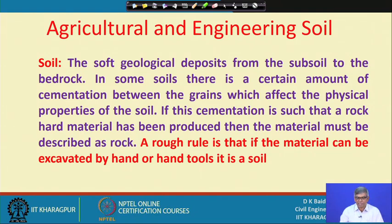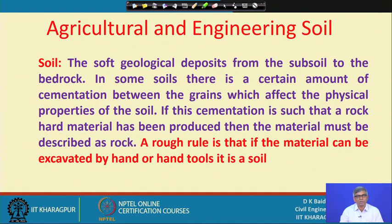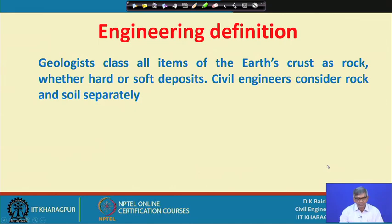Agriculture and engineering soil — according to their classification, the soft geological deposits from the subsoil to the bedrock are as shown in the previous slide. In some soils there is a certain amount of cementation between the grains which affects the physical properties of the soil. If this cementation is such that a rock-like material is produced, then that should be taken as rock. A rough rule is that if the material can be excavated by hand tools, then it will be treated as soil.